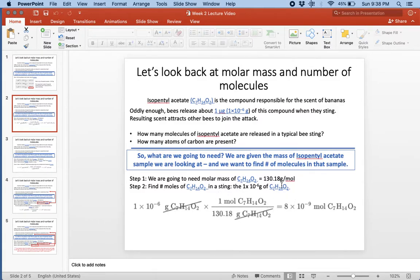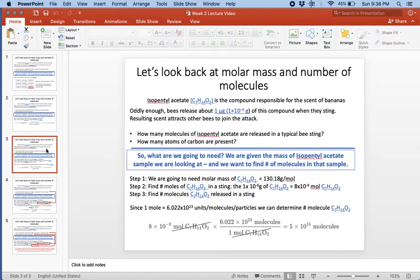The unit I want to be in is moles. That's the unit that's left, so I know I'm on the right track. In one bee sting, we have 8 times 10 to the negative 9 moles of isopentyl acetate.